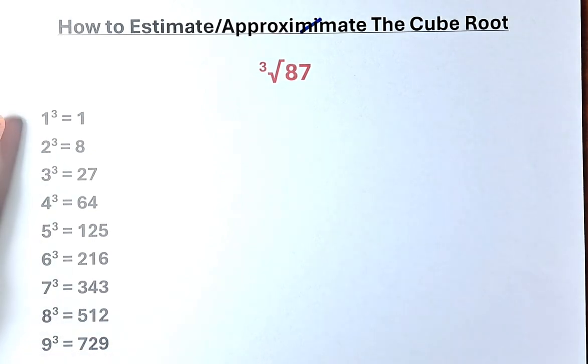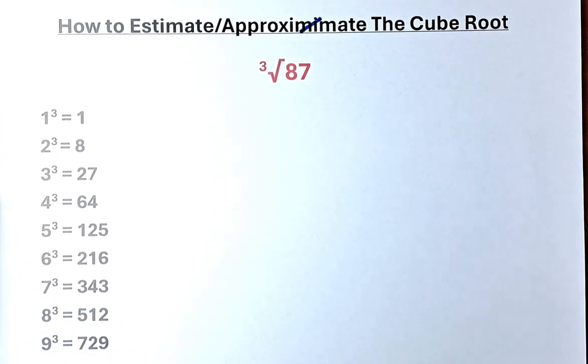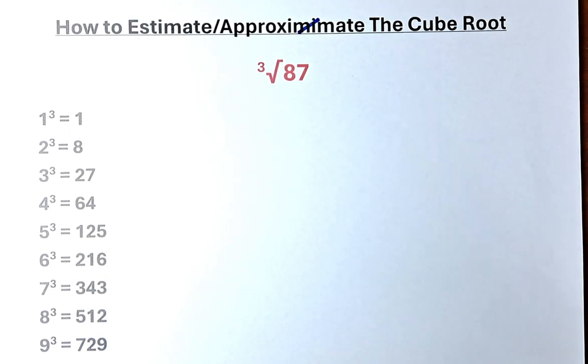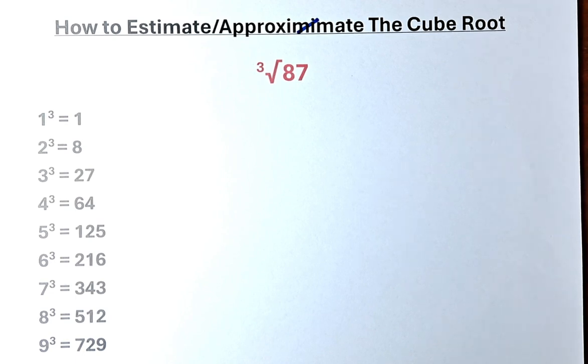So 1 cubed is 1, 2 cubed is 8, 3 cubed is 27, 4 cubed is 64, 5 cubed is 125, 6 cubed is 216, 7 cubed is 343, 8 cubed is 512 and 9 cubed is 729. I believe most of them are quite familiar to you and before we know it we are able to memorize all of them.